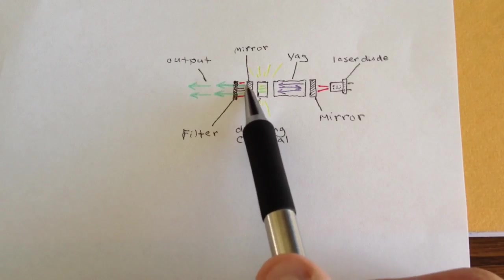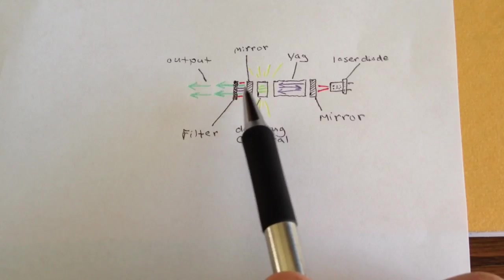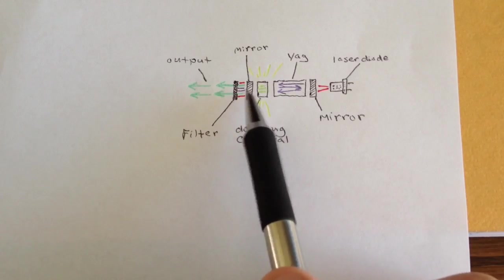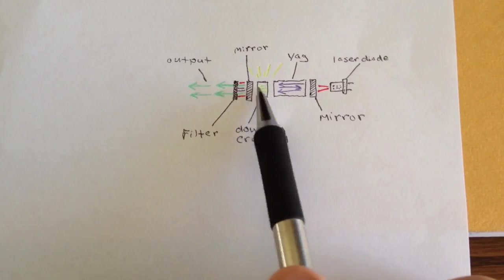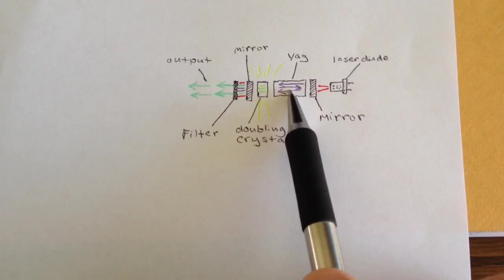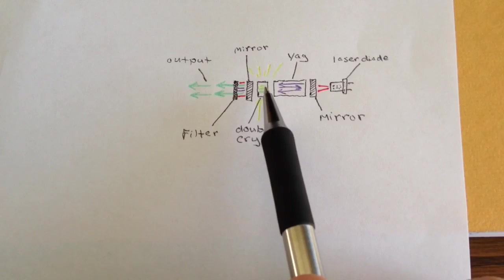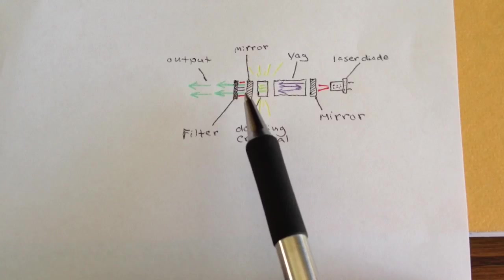The problem you run into is this mirror right here allows the 808 nanometer output to pass. It allows the 532 nanometer output to pass, which is what it's designed to do. In fact, it's supposed to transmit as much as possible of that. However, it also lets some of the 1064 nanometer light from this crystal pass. And so what happens, you've got all three wavelengths that are present in the output.